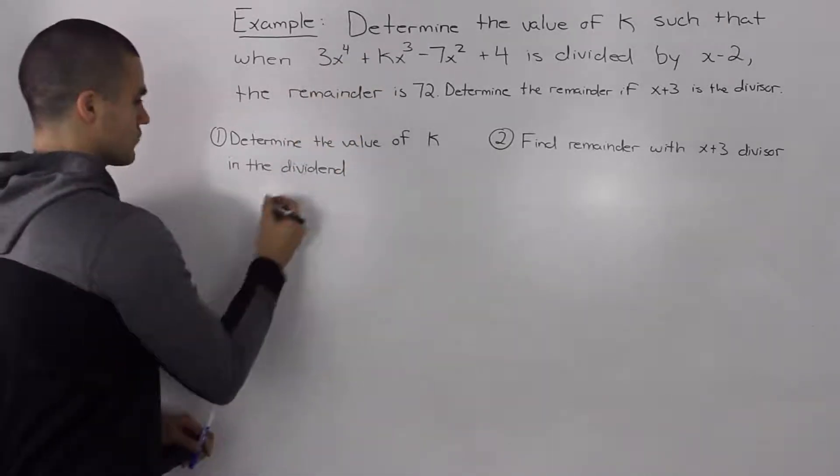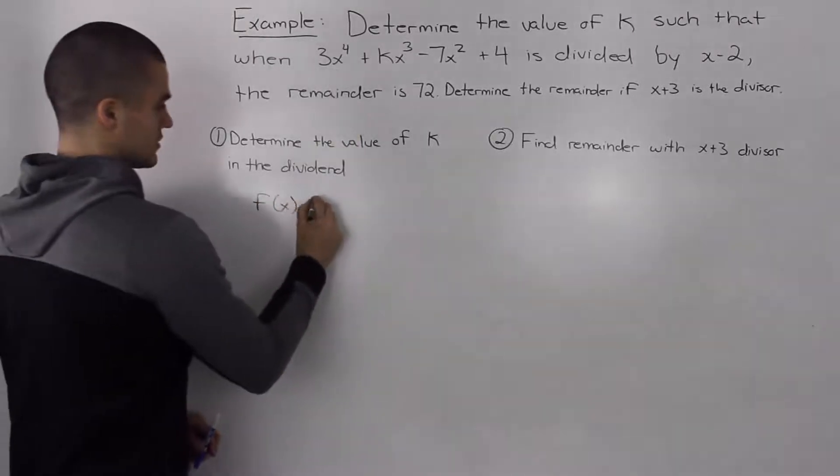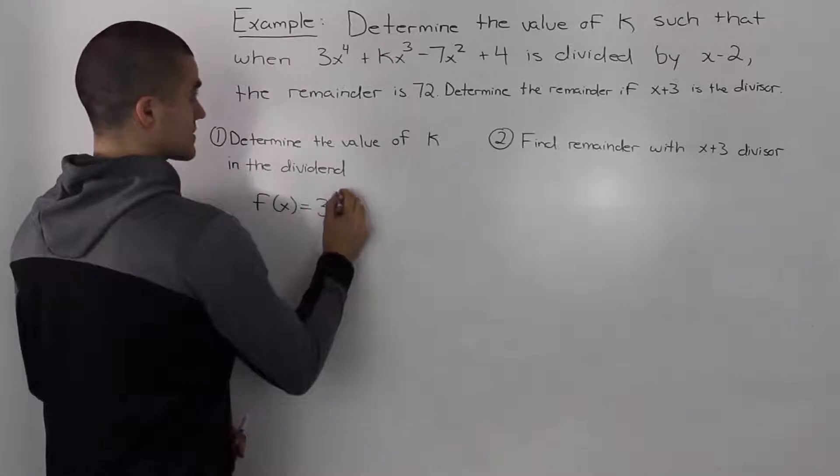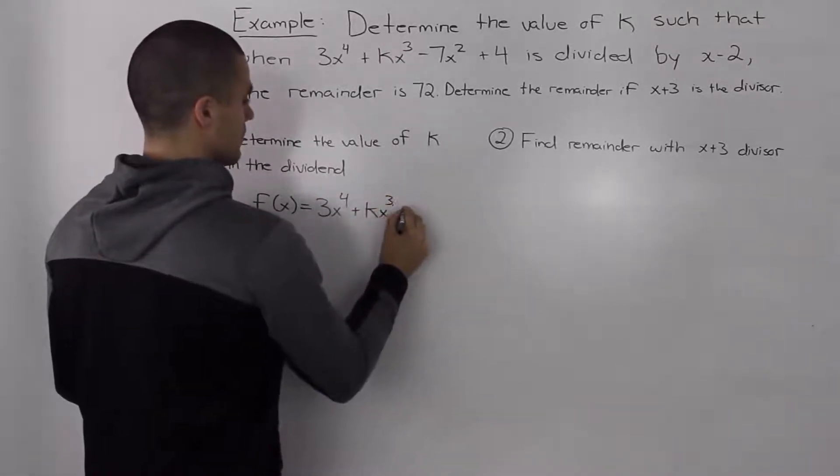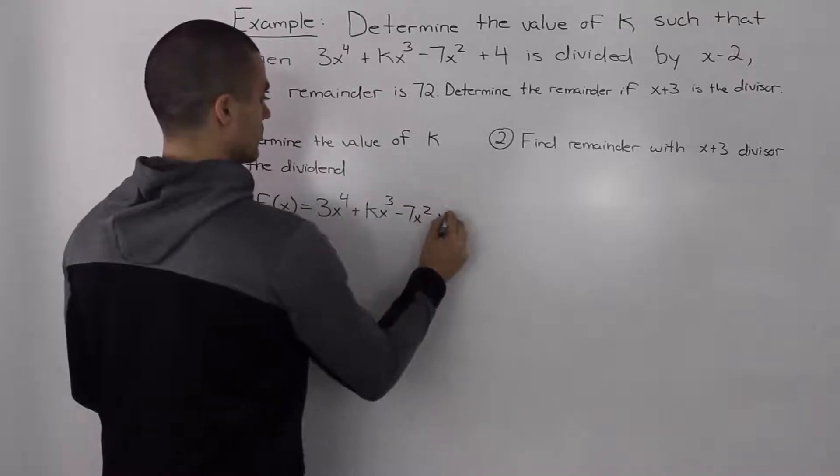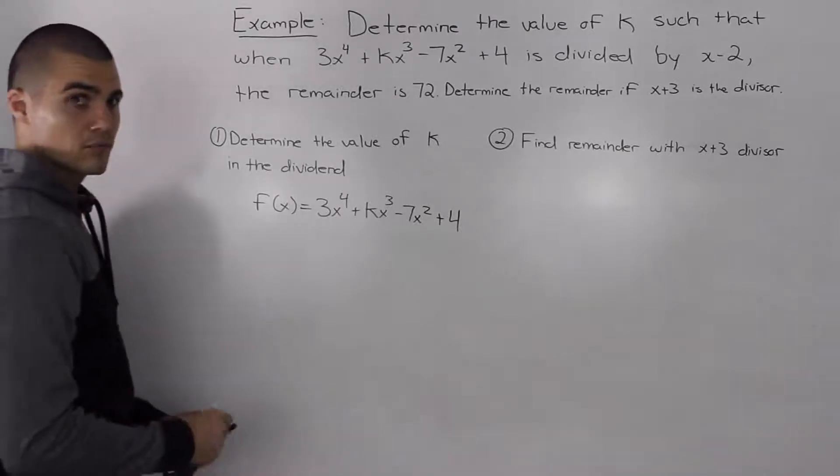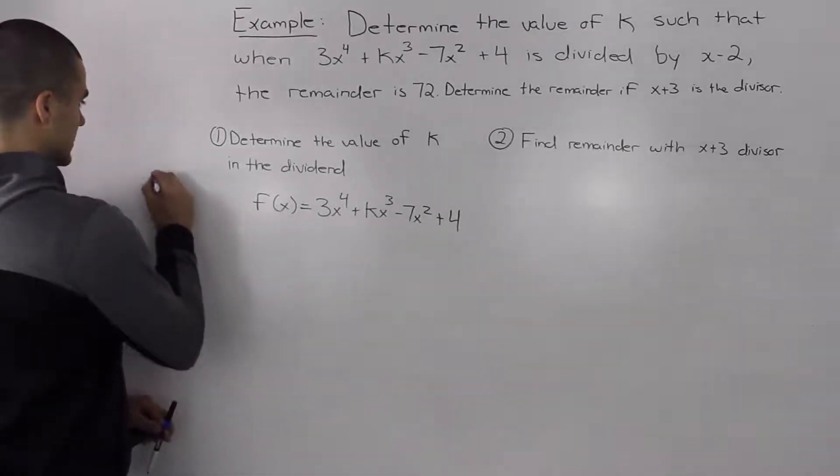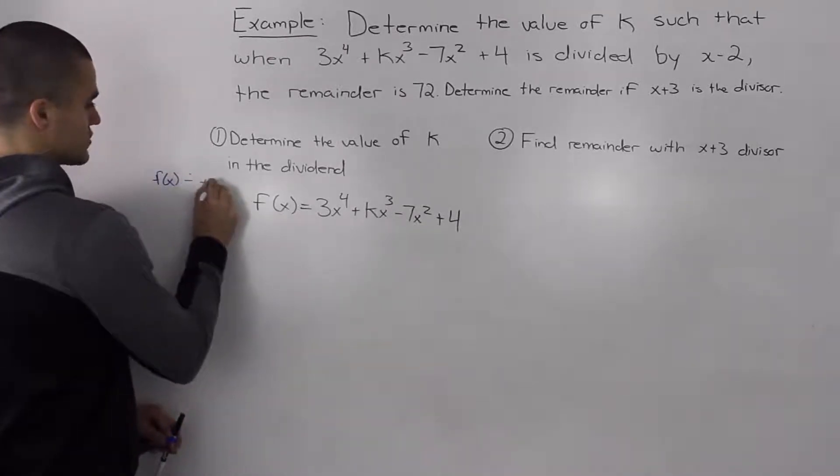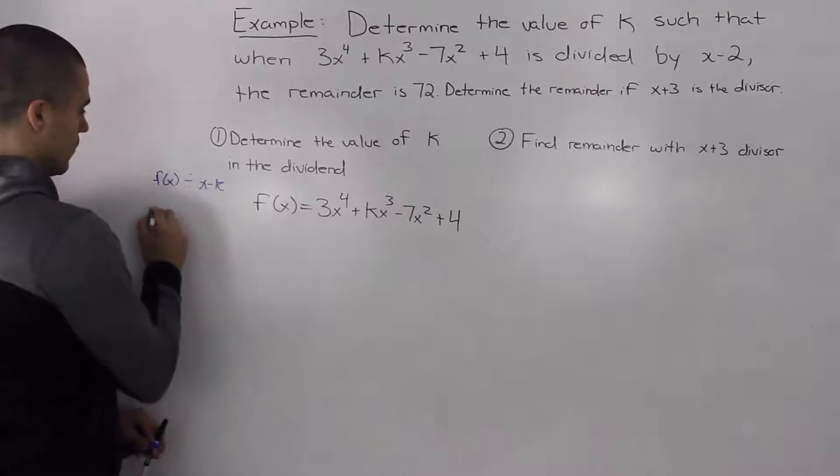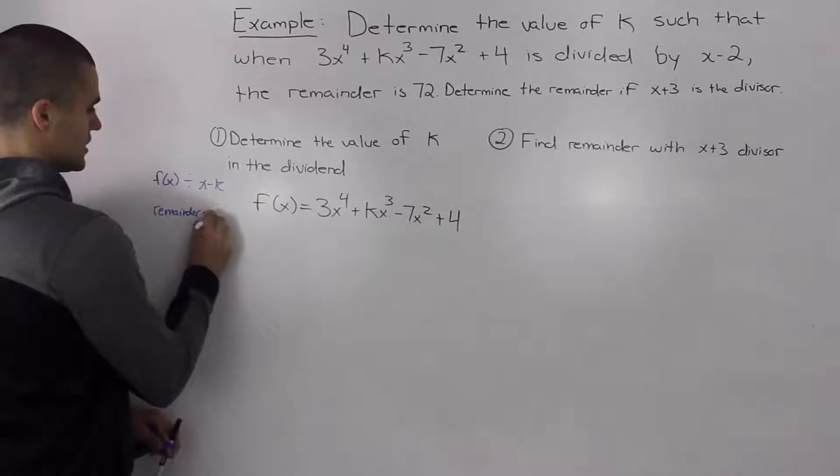So for part 1 we can use the remainder theorem. Let's rewrite our dividend here, label it as f of x. So 3x to the 4 plus kx to the 3 minus 7x squared plus 4. Now what does the remainder theorem tell us? Basically if we have f of x and we are dividing it by a divisor of x minus k, the remainder is just equal to f of k.